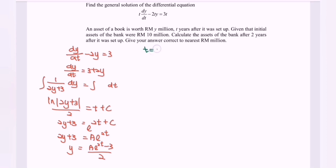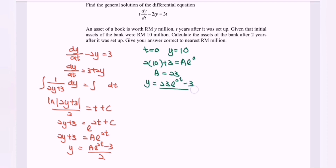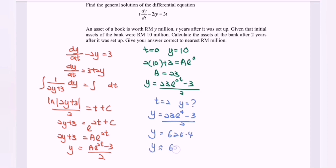The asset of a bank is worth RM Y million, t years after setup, with initial assets of RM 10 million. At t = 0, y = 10: 2(10) + 3 = Ae⁰, giving A = 23. So y = (23e^(2t) - 3)/2. After 2 years (t = 2): y = (23e⁴ - 3)/2 ≈ 626.4, so the asset approaches RM 626 million.